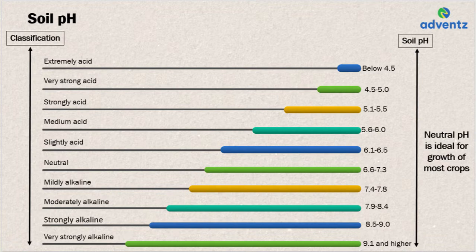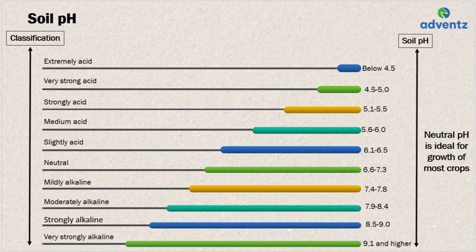Beyond 7.3, the soil starts becoming alkaline. With pH between 7.4 to 7.8, the soil is mildly alkaline. For pH between 7.9 to 8.4, it is moderately alkaline. For pH between 8.5 to 9.0, it is strongly alkaline. And when the soil pH is 9.1 and higher, the soil is very strongly alkaline.